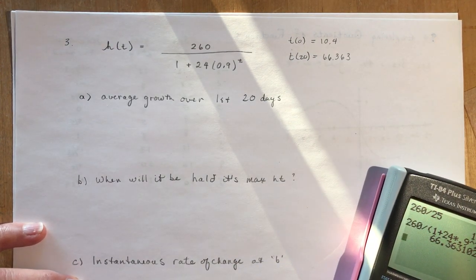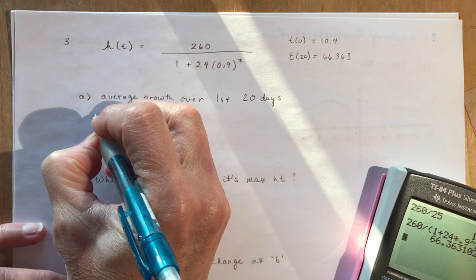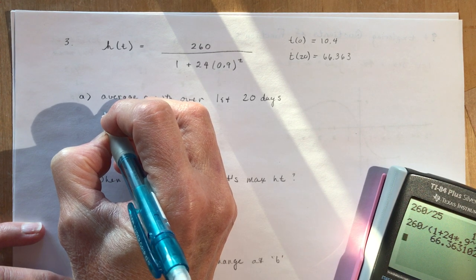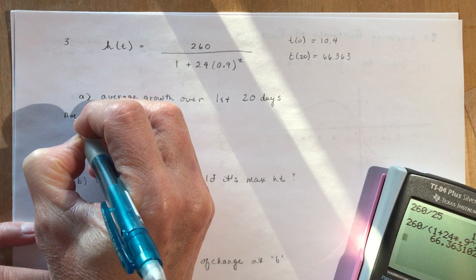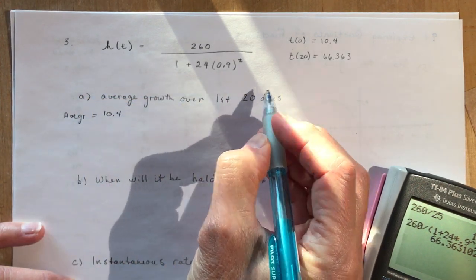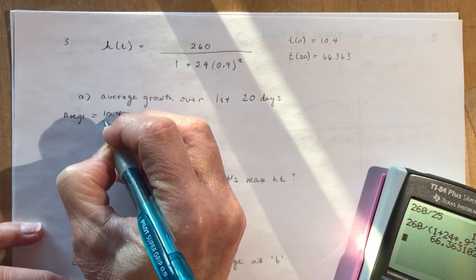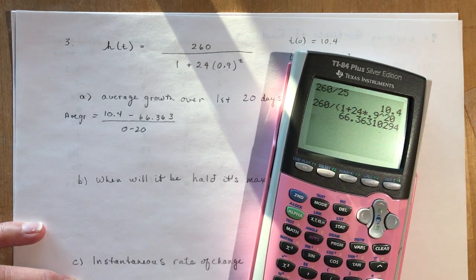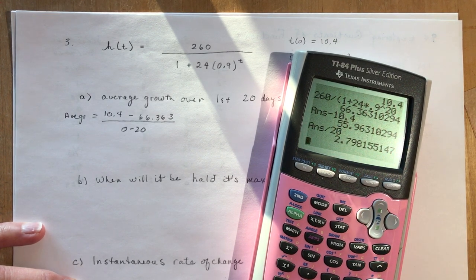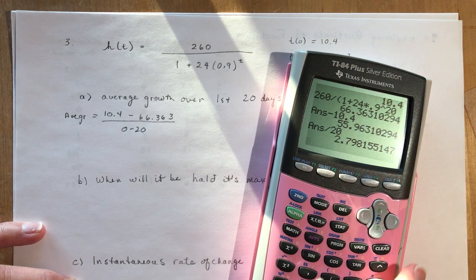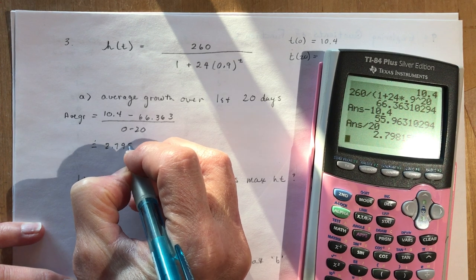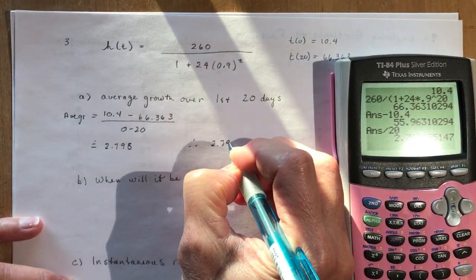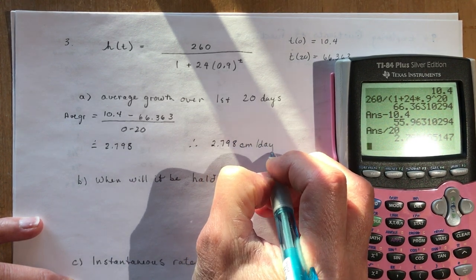So 24 times 0.9 to the power of 20, and we get 66.363. What's the average growth over those first 20 days? The average growth is going to be the slope of the secant, right? So I have 10.4 minus 66.363 over zero minus 20, or you could have written it the other way. I'll divide it by 10.4 and divide that by 20, and I get 2.798, approximately 2.798. Don't forget when you're doing average growth or instantaneous growth, all these rates of change, you need units. So it would be 2.798 centimeters per day.